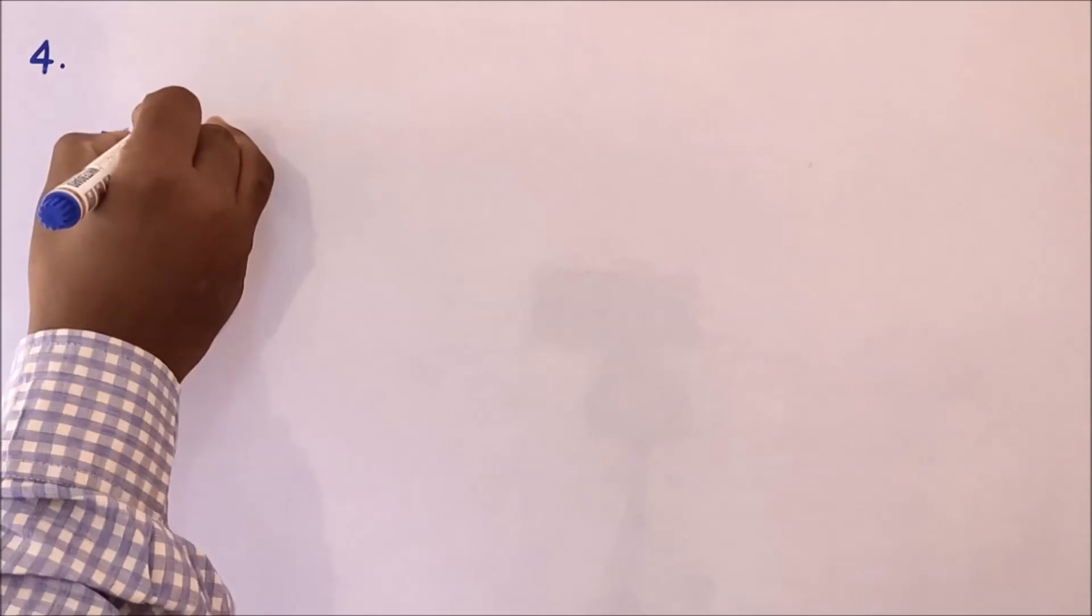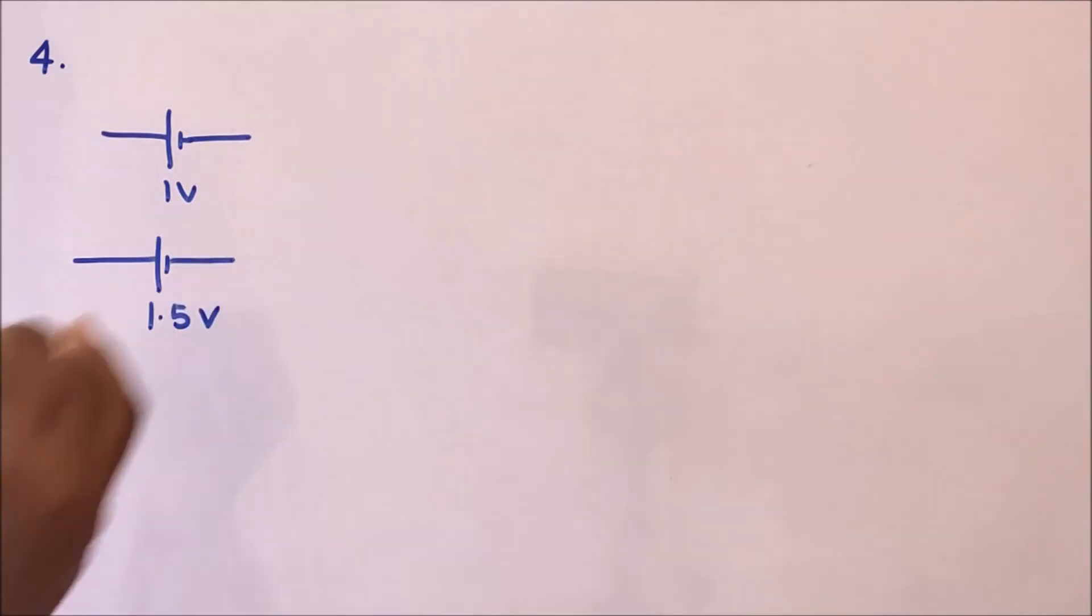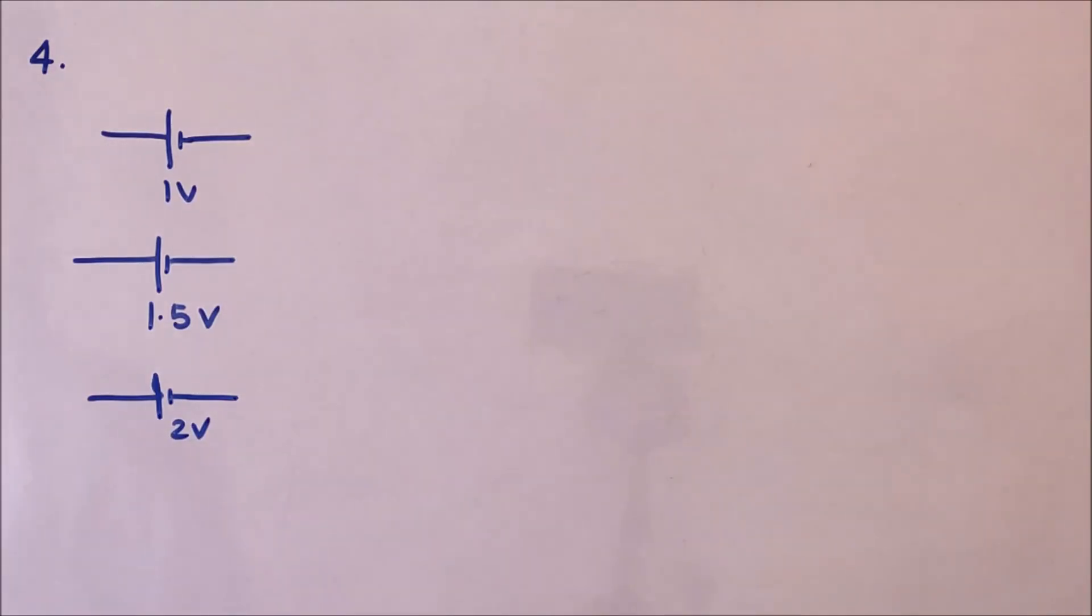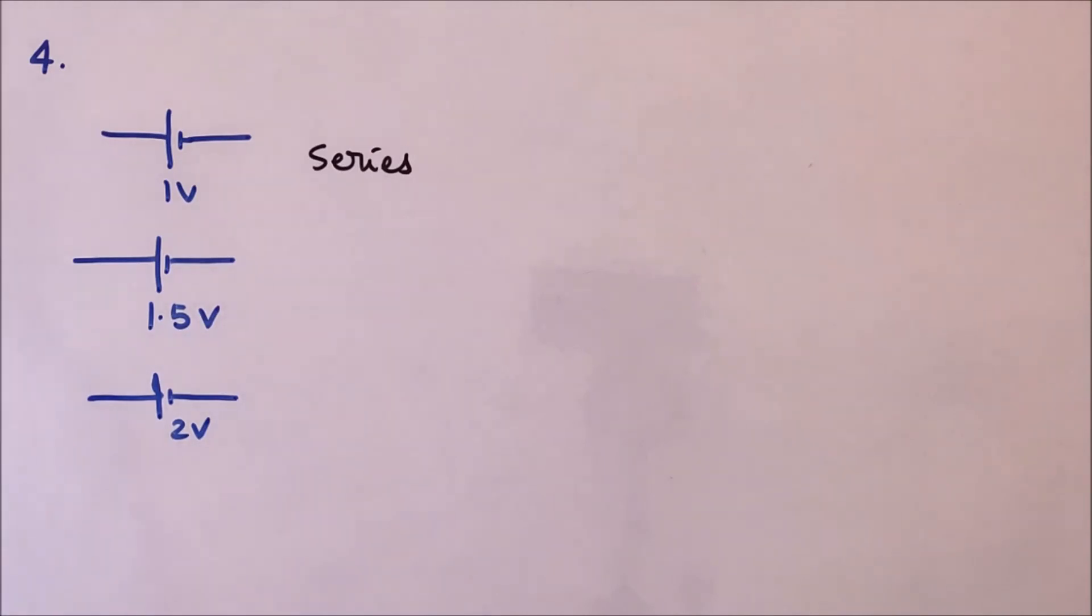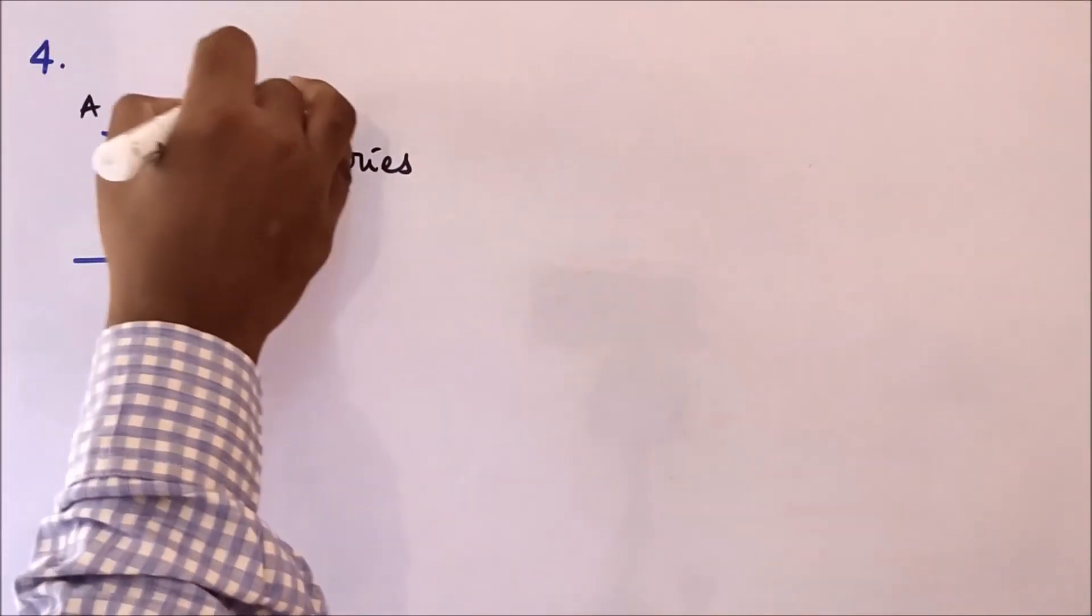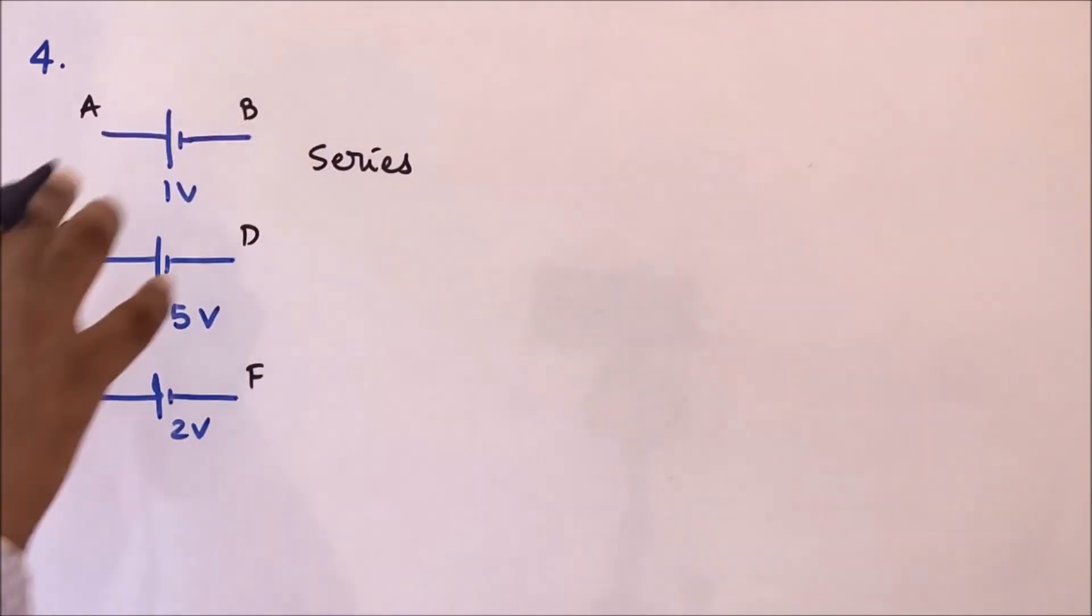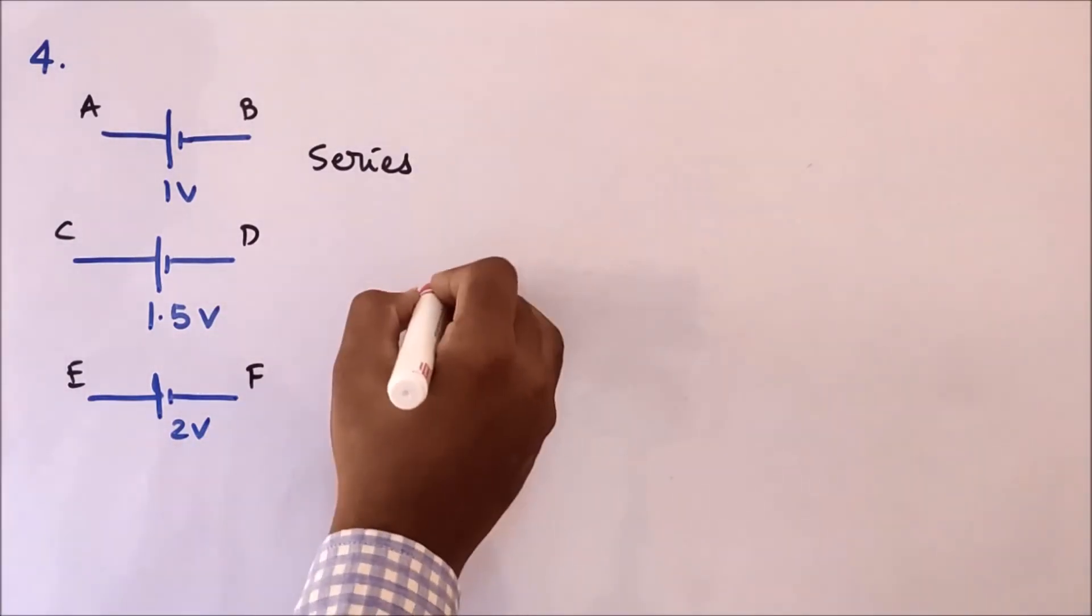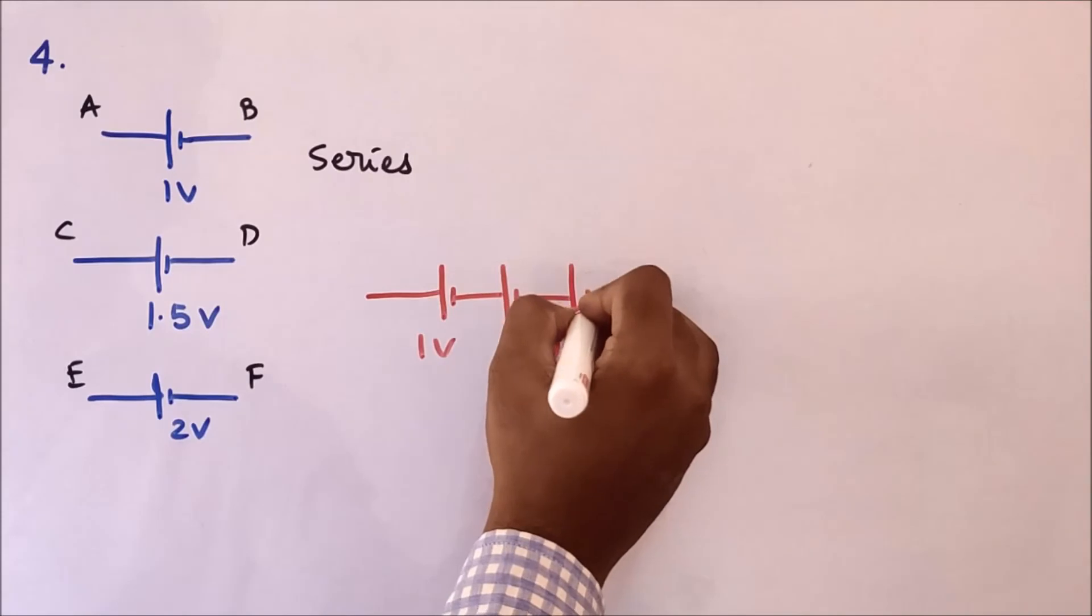So let us take three different batteries, each having the EMF: 1 volt, and the other one 1.5 volt, and the third one 2 volt. So how do we join them? We have to, according to the question, join them in series. So series implies one after the other. So let me write the terminals names: A-B, C-D, E-F. So A to B, I will join C; to D, I will join E. So this is how the connection is going to be, the series combination. So 1 volt, 1.5 volt, and then 2 volt.